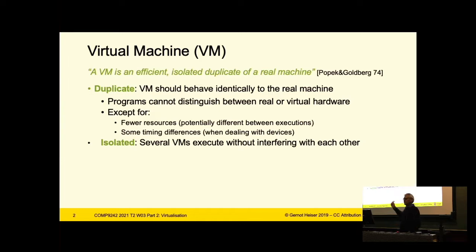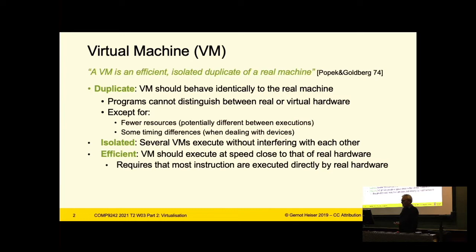The 'duplicate' is the functional requirement, and 'isolated' is as important: the idea that you can have multiple virtual machines on the same physical machine and they're isolated from each other — each thinks it's living in its own universe. A process has some of these properties — processes are isolated and each has the illusion of operating in its own universe, achieved by virtualization of the memory resource.